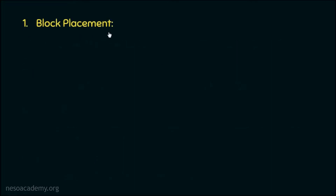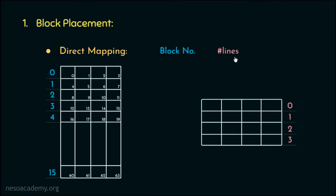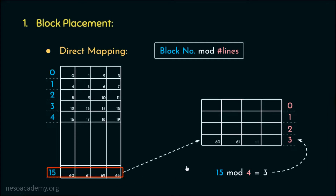In direct mapping, block placement is done by taking the main memory block number and the number of lines in the cache and performing a modulus operation. For example, to place main memory block number 15 with 4 cache lines, we compute 15 mod 4, giving line number 3. Therefore, words 60, 61, 62, and 63 will be placed in line number 3.